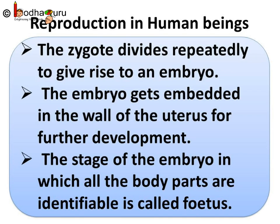The zygote divides repeatedly to give rise to an embryo. The embryo gets embedded in the wall of the uterus for further development. The stage of the embryo in which all the body parts are identifiable is called a fetus. When the development of the fetus is complete, the mother gives birth to the baby.